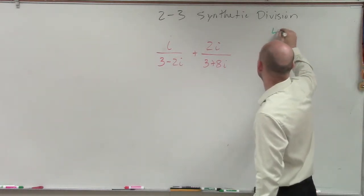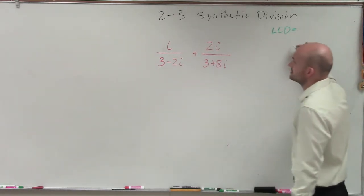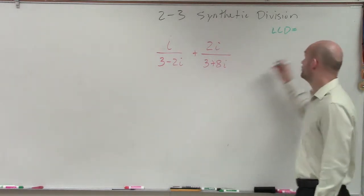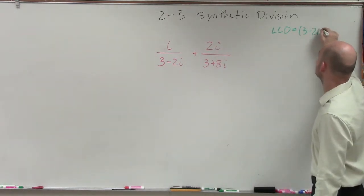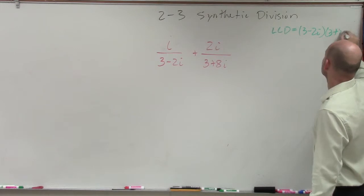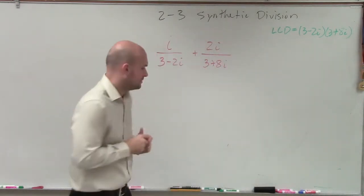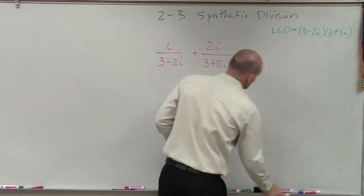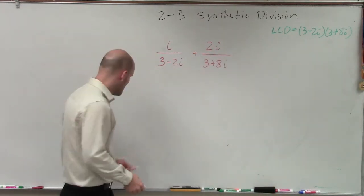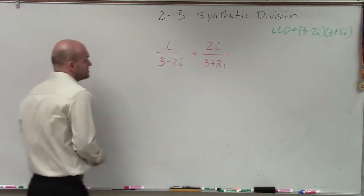So let's write it out. So the LCD, least common denominator of these two, it's just simply going to be 3 minus 2i times 3 plus 8i, right? So now let's go ahead and multiply by our least common denominator to see what we get.